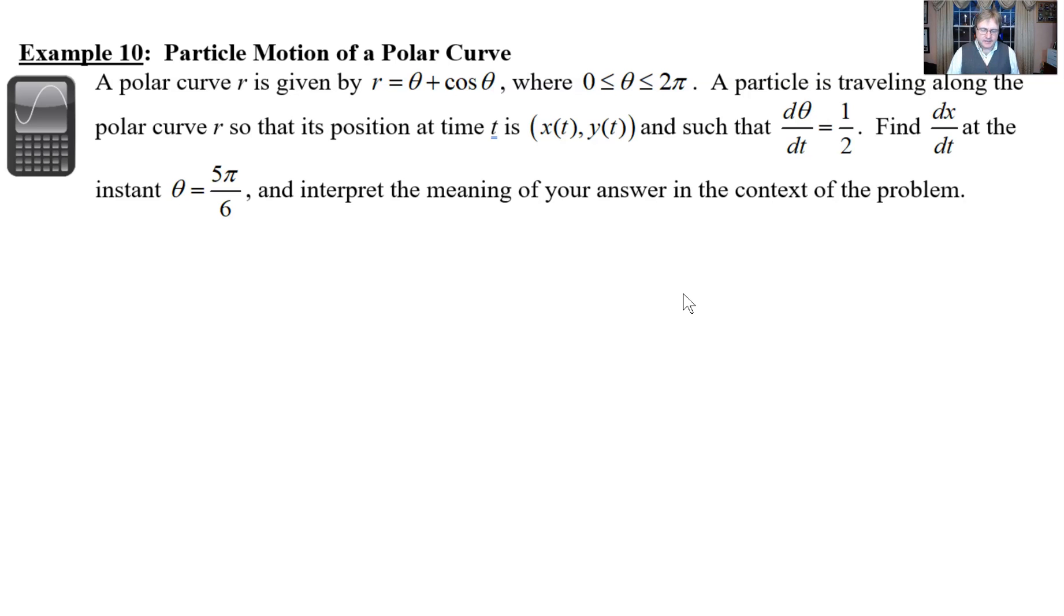And we also know that dθ/dt is a half. We're asked to find dx/dt at the instant theta is 5π over 6 and then interpret the meaning of our answer within the context of the problem. And as you can see, it is a calculator active problem only because it's a little bit nasty with some of the evaluations that you have to do at the end.